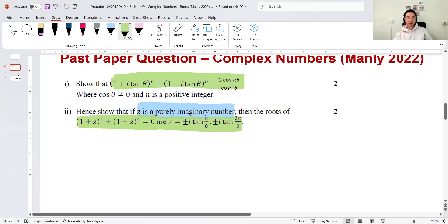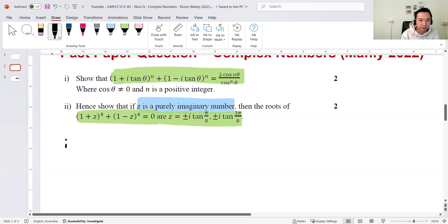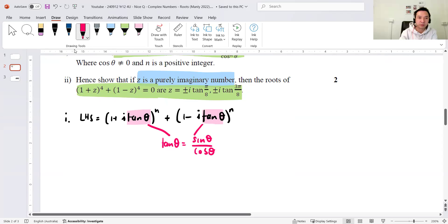So, jumping right in for part one. Show that. So, that's the left-hand side, right? 1 plus i tan θ to the power n, 1 minus i. Now, the giveaway for how to start this question is the fact that on the left-hand side, we have tans, and on the right-hand side, we have cosines, right? So, it sort of makes a lot of sense for you to sub in the identity that tan equals to sine over cos, right? Makes a lot of sense.